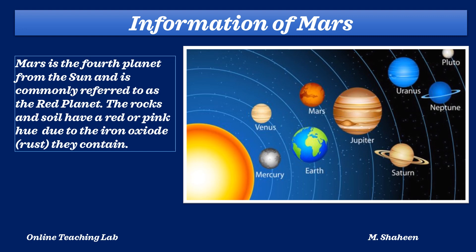Now coming to real life information about Mars. Mars is the fourth planet from the sun and is commonly referred to as the red planet. The rocks and soil have a red or pink hue due to the iron oxide, that is rust, which they contain.